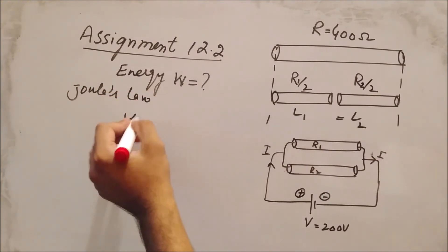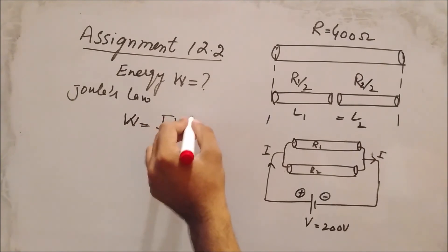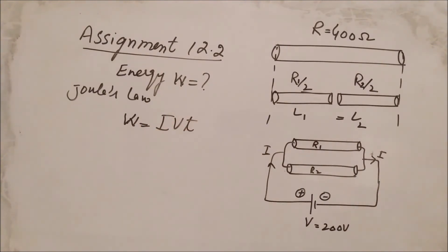According to Joule's law, W = I × V × t. But we don't have the value of I, so we use Ohm's law and change this formula to W = V²t/R.